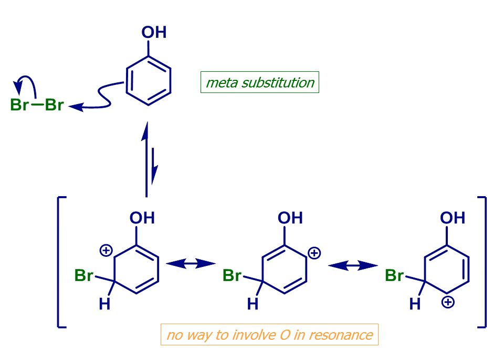But if we brominate meta to the OH, while there is still resonance-stabilization of the carbocation, there's no way to involve that oxygen and the electrons on it in stabilizing the intermediate.